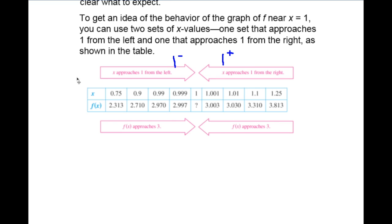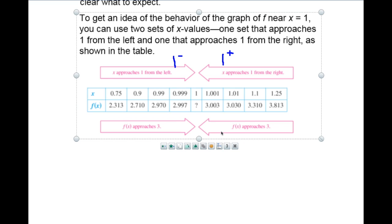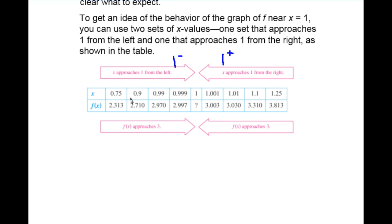As we get closer and closer to the value of one, you can see the y-values are getting closer and closer to what looks like three. And on the other side, you can see it's getting smaller and smaller, still getting closer and closer to three. So as you can see from both sides, the function value approaches three. That's a very important concept.